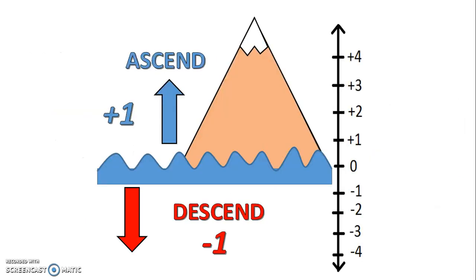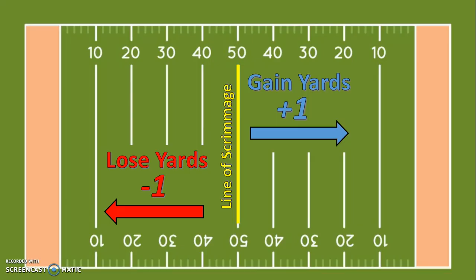Another common real-world example of positive and negative integers is sea level. If you climb up a hill or mountain, that's a positive one; if you go down, that's negative one — the positive and negative cancel each other out. If you go below sea level, you're in the negative values. On the football field, when a player carries the ball past the line of scrimmage, that's positive yards; if he's tackled behind the line of scrimmage, he loses yards — that's negative yards.